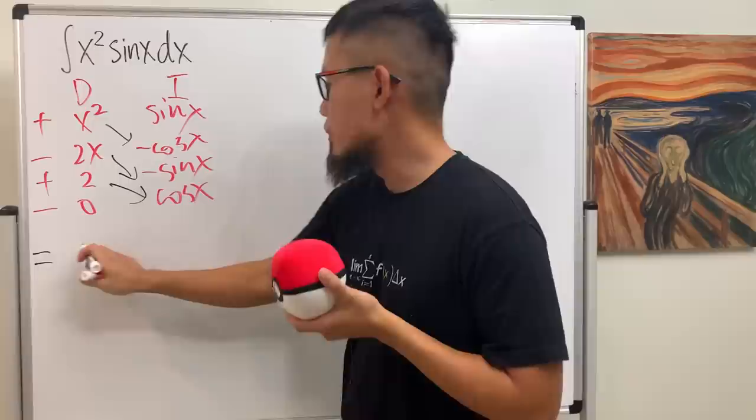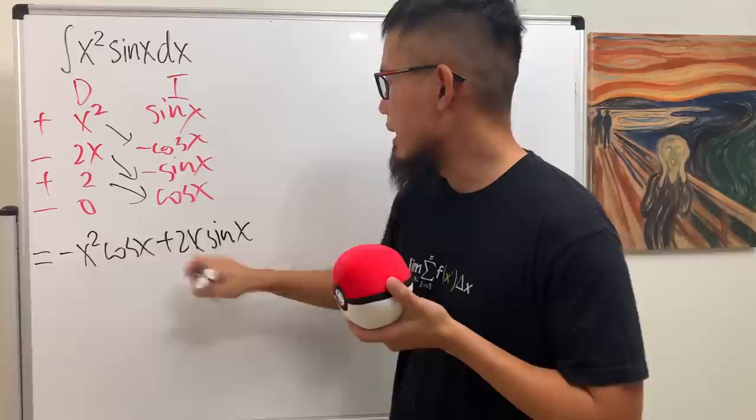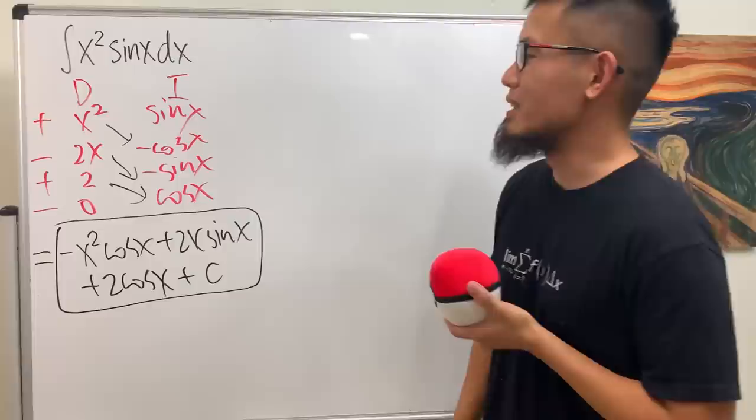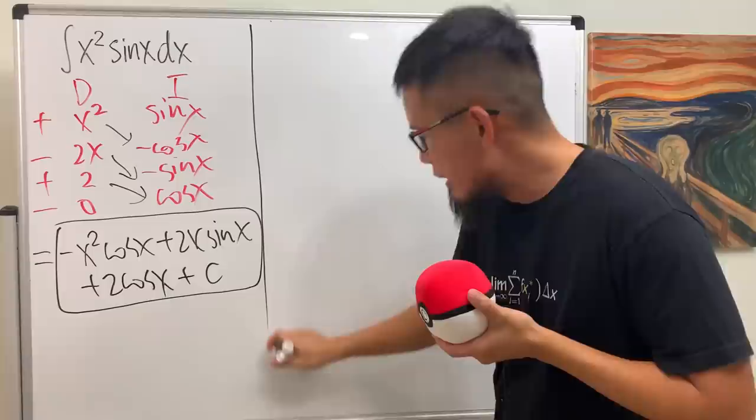This times this, we get negative x squared cosine x, and this times that is plus 2x sine x, and then this times this is plus 2 cosine x, and of course they still remember the plus C. You should be happy if your students do this on the test, because it's actually a much nicer format than the traditional UdV setup for integration by parts.